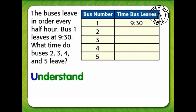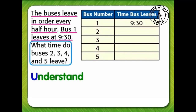First, we need to understand the problem. What do we know? The buses leave in order every half hour. Bus 1 leaves at 9:30. What do we need to find? What time do buses 2, 3, 4, and 5 leave?